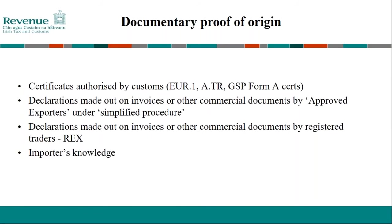Origin always needs to be proven in order to claim preferential treatment. The most recent free trade agreements allow for the use of the registered exporters electronic system — the REX system — and that is what would be expected to be used if an agreement is reached between the EU and the UK. If you're importing products and want to claim the preference, then your supplier in the partner country will need to provide the necessary proofs. Whereas if you're an exporter, you must provide the proofs so that your purchaser can claim the preference.